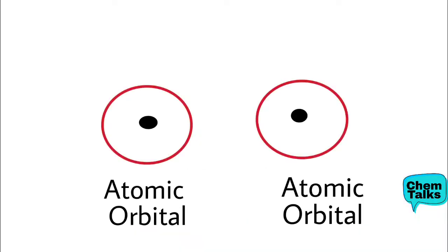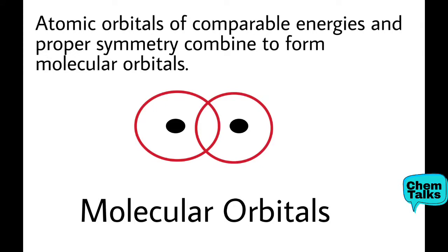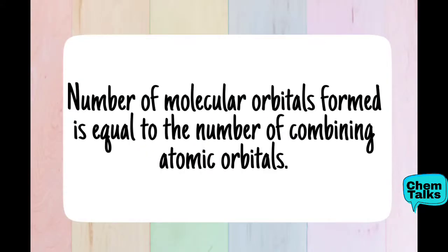You can see in the image that these are the two atomic orbitals. These are two atomic orbitals whose energy is comparable and whose symmetry is similar, so what will be formed by combining them? Molecular orbitals. The next feature is: the number of molecular orbitals formed is equal to the number of combining atomic orbitals. The atomic orbitals are combined, and the same number of molecular orbitals will be formed — just as with hybrid orbitals in hybridization.